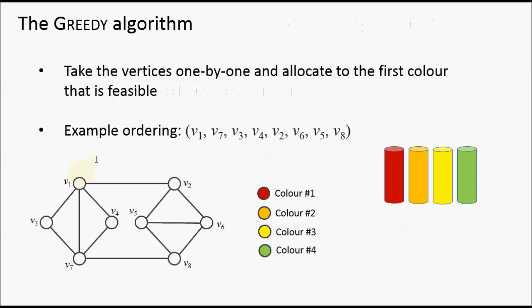Perhaps the most well-known algorithm for colouring the vertices of a graph is known as the Greedy Algorithm — sometimes called the First Fit Algorithm. This operates in a very simple way: it takes the vertices one by one, in some order, and allocates them to the first colour that is feasible — the first colour available which doesn't have an adjacent vertex assigned to that colour.